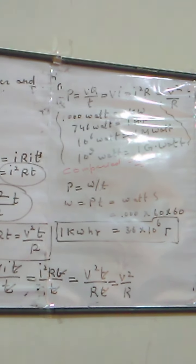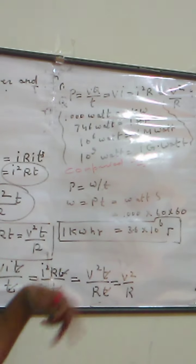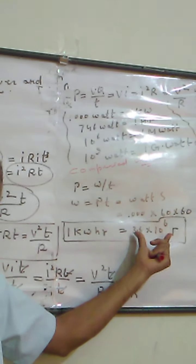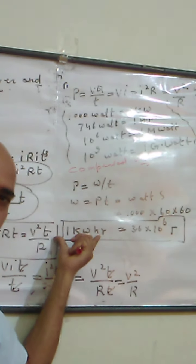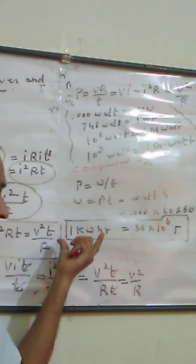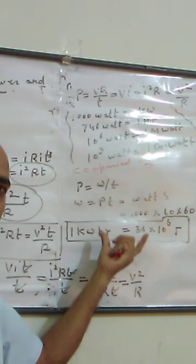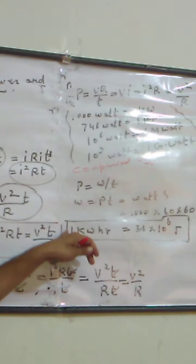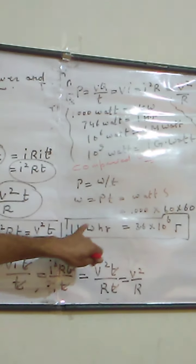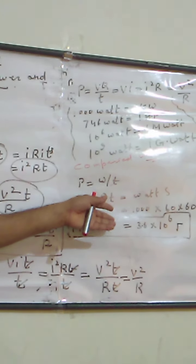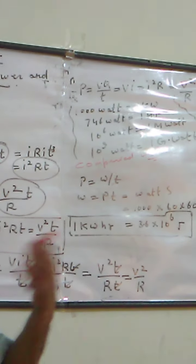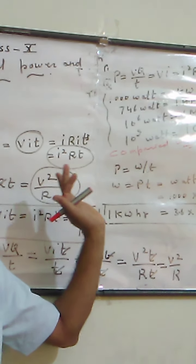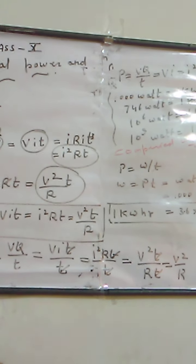So 1 kilowatt-hour is the commercial unit for measuring electrical energy, and it is equal to 3.6 into 10 to the power 6 joules. The electric meter gives us readings in these units. If it shows 2 units, that means 2 kilowatt-hours; 3 units means 3 kilowatt-hours. If the cost of 1 unit is 3.5 rupees, we multiply that by the number of units to find the electric bill.